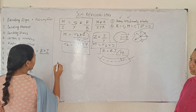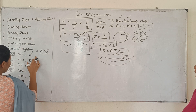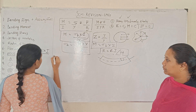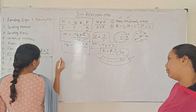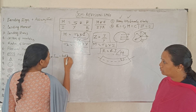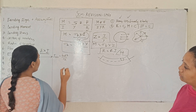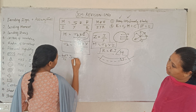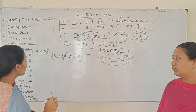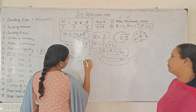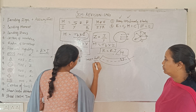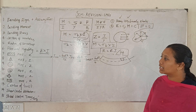Now for a rectangle cross-section: about the x-x axis, moment of inertia I equals b·d³ divided by 12. Section modulus Z equals b·d² divided by 6.